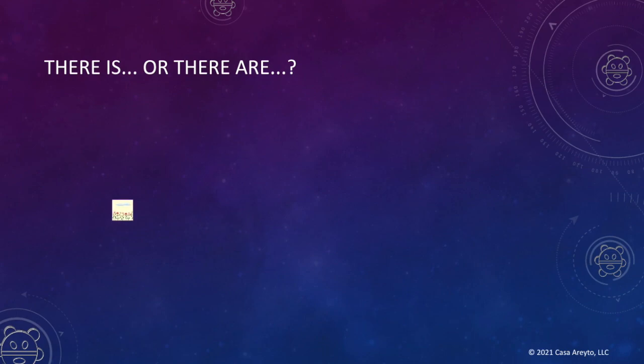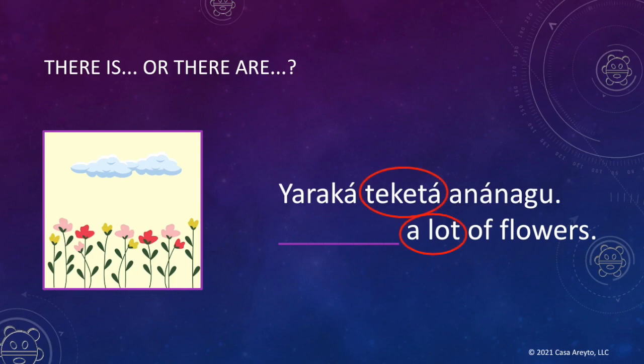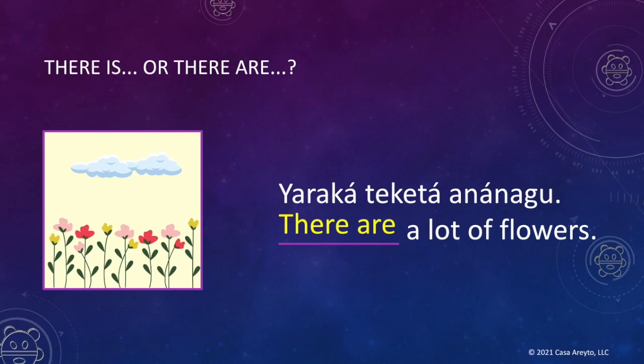Now that seems simple enough because we saw some numbers. Now I'm going to give you a little bit of a challenge. Let's look at this picture and sentence. If you look at the word after yara ka, I don't see a number. But the word is tequeta, meaning 'a lot.' Does tequeta mean more than two or one or less? I think it's more than two. So we fill in the blank with 'there are.' Let's read it together: Yara ka tequeta ana nāgu. There are a lot of flowers.